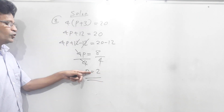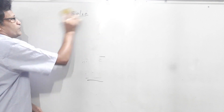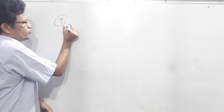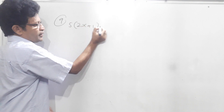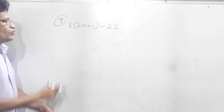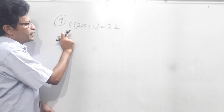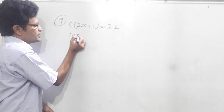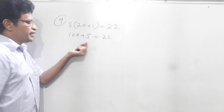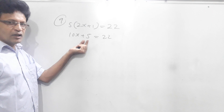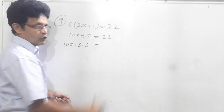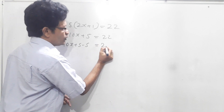Now we will do question number 9. Question number 9 is 5 times (2x plus 1) equals 22. Now we have to remove the bracket. 5 times 2x is 10x, 5 times 1 is 5, equals 22. Now we have to get rid of this 5. For that we have to subtract 5 from this side. 10x plus 5 minus 5; from 22 also we have to take 5 out, so 22 minus 5.